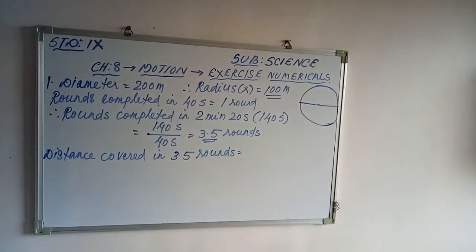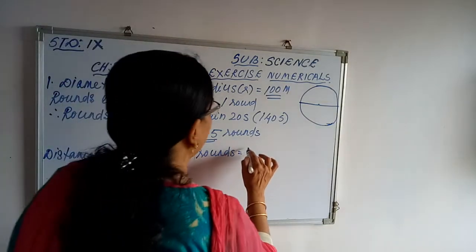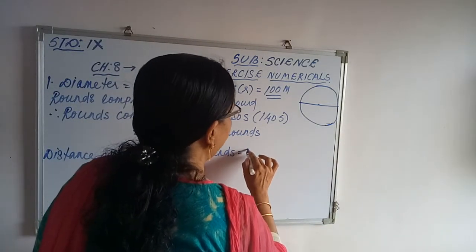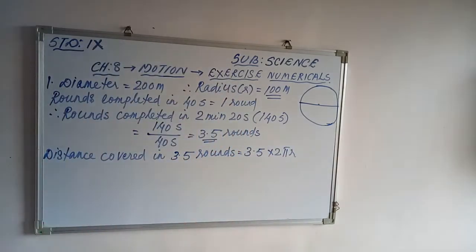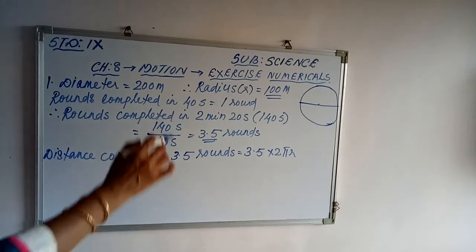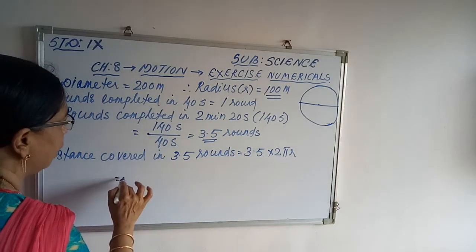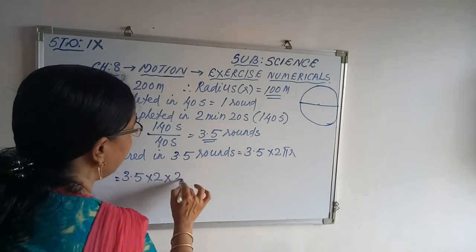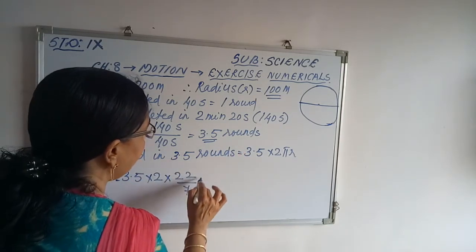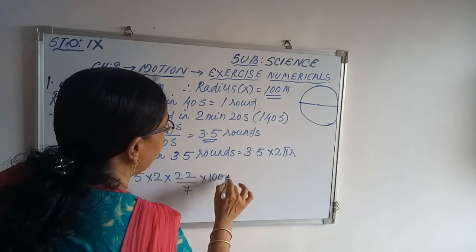In one round, the distance is 2πR. Therefore, in 3.5 rounds, it is 3.5 multiplied by 2πR. As it is the circular track, distance covered in one round equals the circumference. The radius is 100 meters. That is equal to 3.5 multiplied by 2 into 22/7 multiplied by 100 meters.